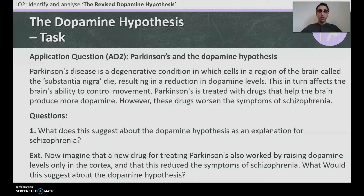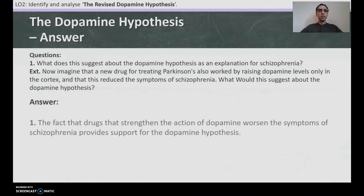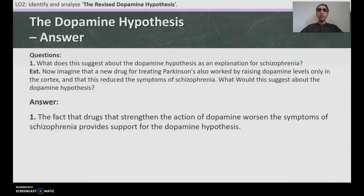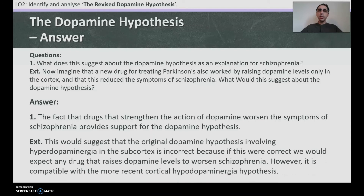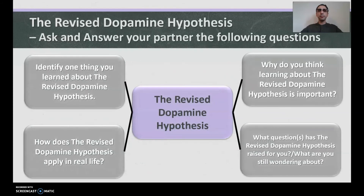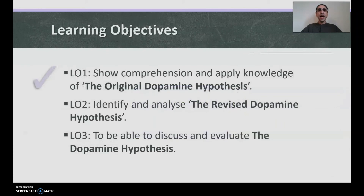Pause the video and write your answers before I give them to you. Number one: the fact that drugs which strengthen the action of dopamine worsen the symptoms of schizophrenia provides support for the dopamine hypothesis. Extension answer: this would suggest that the original dopamine hypothesis involving hyperdopaminergia in the subcortex is incorrect, because if it were correct, any drug raising dopamine levels would worsen schizophrenia. However, it is compatible with the more recent subcortical hypodopaminergia hypothesis — that's the revised dopamine hypothesis.